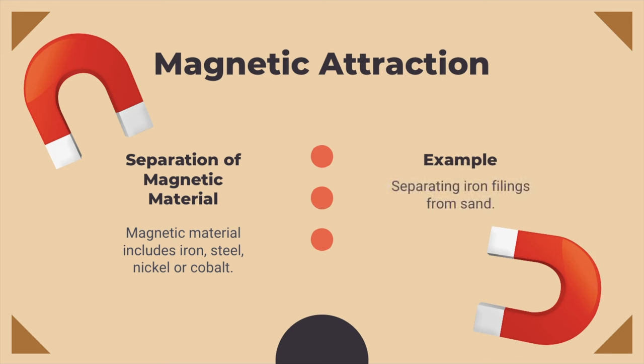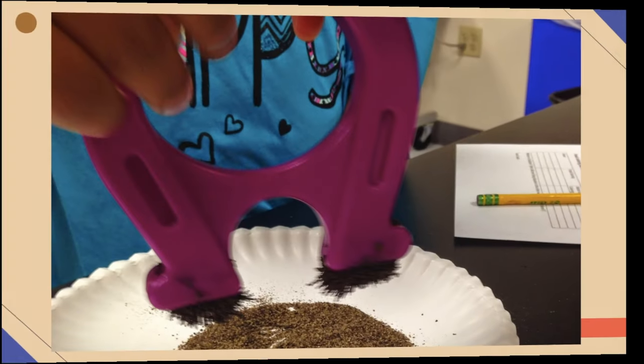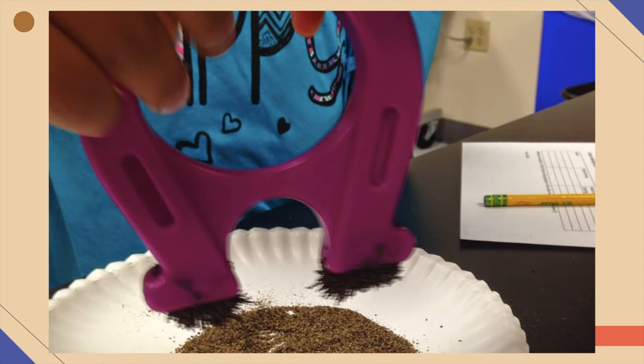Here the student is holding a magnet and on the plate is a mixture of sand and iron filings. You can see that the magnet attracts the iron, thus separating the mixture.